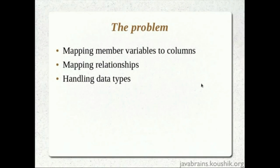The third pain point: handling data types. Say I have a boolean field in my user object — for example, 'isActive' — to track whether a user is active or inactive. In Java I use true or false, but most databases do not have a boolean data type. It might be stored as a CHAR (Y or N) or an integer (0 or 1). I have to handle this data type conversion myself when writing the code to save or retrieve data, and any changes require modifying that code manually.